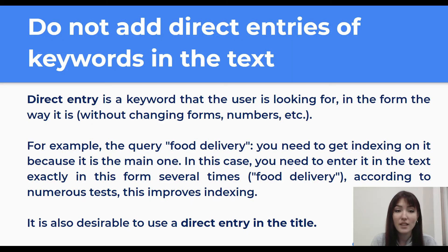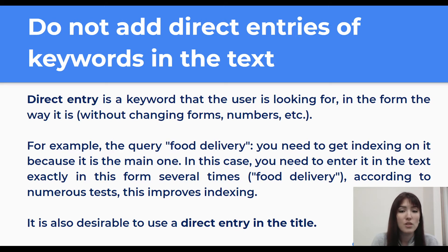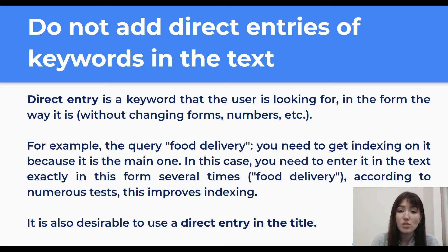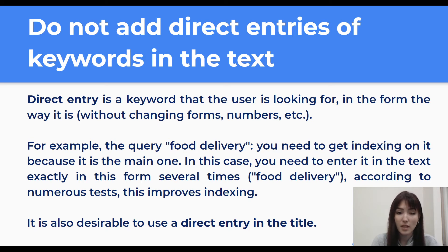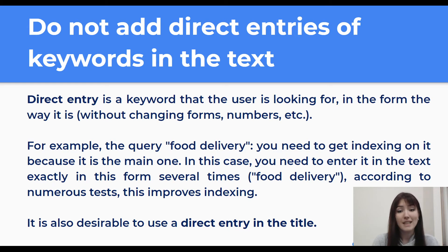Do add direct entries of keywords in the text. A direct entry is a keyword that the user is searching for, used exactly as-is without changing forms or numbers. For example, the query 'food delivery' — if you need to rank for it because it is a main keyword, you need to enter it in the text exactly in this form several times: 'food delivery'. According to numerous tests, this improves indexing. It is also desirable to use a direct entry in the title.